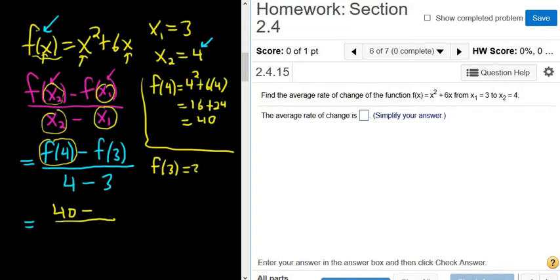This will be 3² + 6 times 3. That's going to be 9 plus... and then 6 times 3 is 18. So that's 27. So it's going to be 27, because f(3) is 27. We just replace this entire thing here with 27.